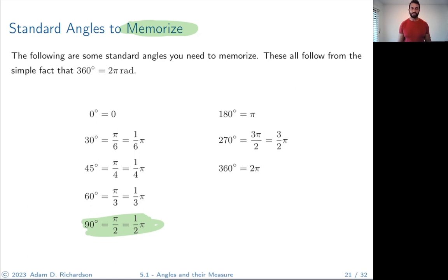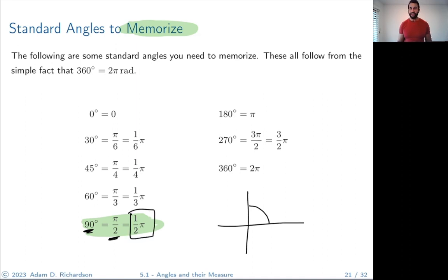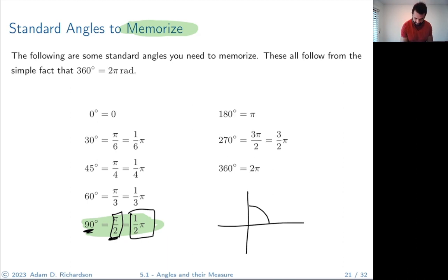Zero degrees is zero radians. Ninety degrees is π/2 radians — that makes sense because pi is the upper half circle and 90 degrees is half of that. Think of π/2 as one half of pi. A lot of other students try to memorize all the angles on the unit circle, but you really don't need to do that. Memorize the core ones and you can count to get the rest.